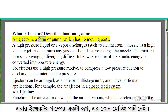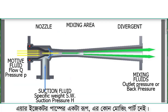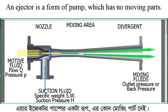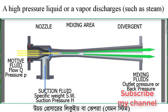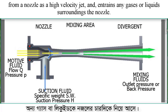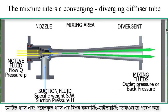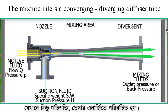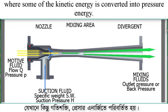An ejector is a form of pump which has no moving parts. A high-pressure liquid or vapor, such as steam, discharges from a nozzle as a high-velocity jet and entrains any gases or liquid surrounding the nozzle. The mixture enters a converging-diverging diffuser tube, where some of the kinetic energy is converted into pressure energy.